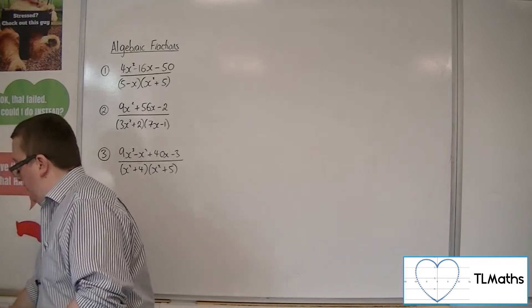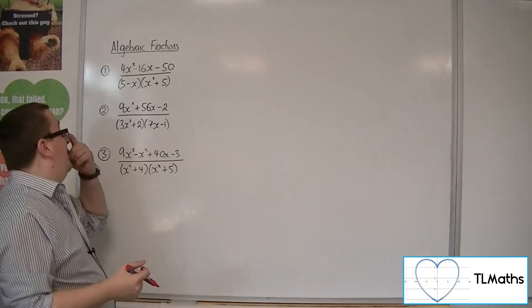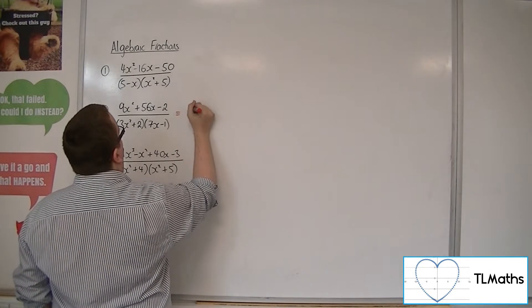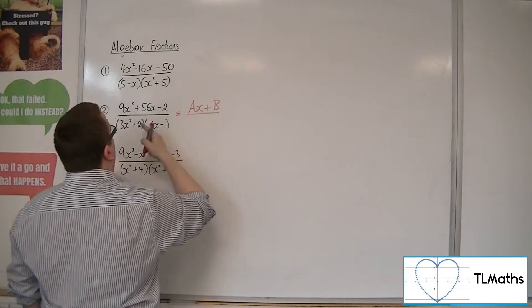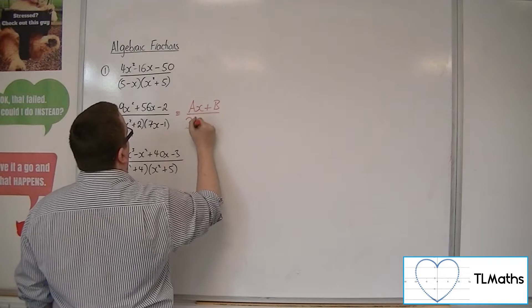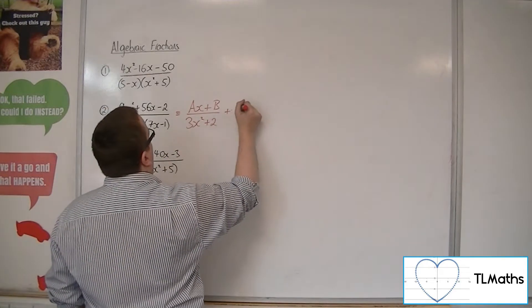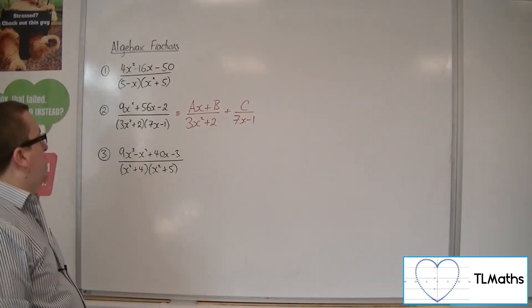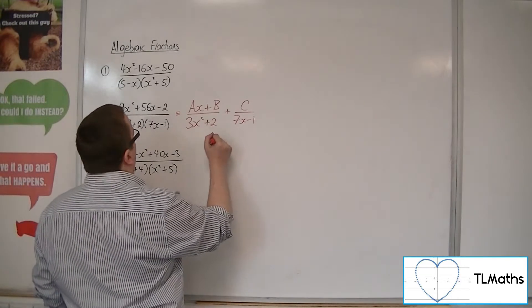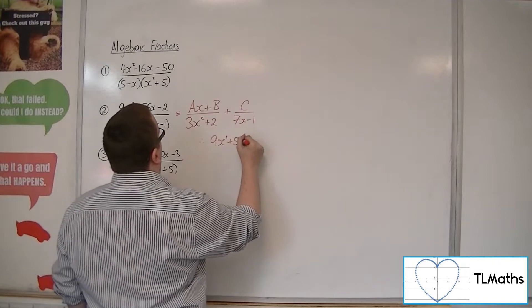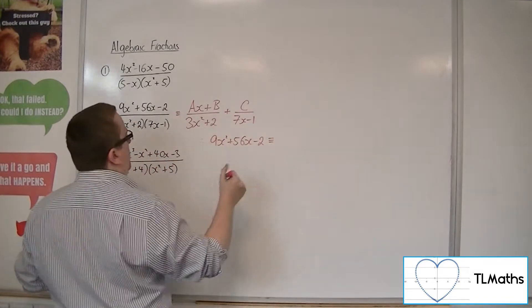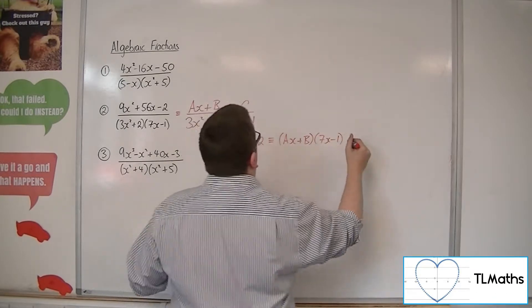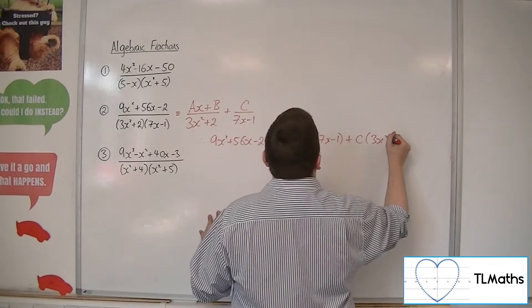For number 2, we have (9x squared plus 56x minus 2) over (3x squared plus 2)(7x minus 1). We write this as (ax plus b) over (3x squared plus 2) plus c over (7x minus 1). Multiplying both sides by (3x squared plus 2)(7x minus 1), we get 9x squared plus 56x minus 2 equivalent to (ax plus b)(7x minus 1) plus c(3x squared plus 2).